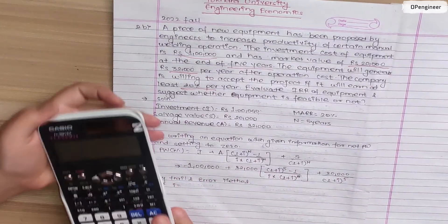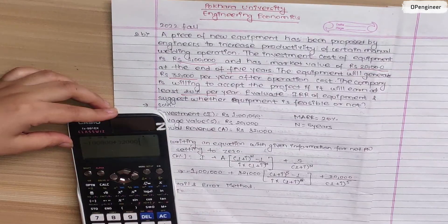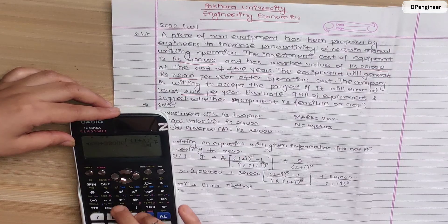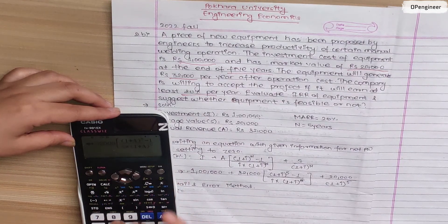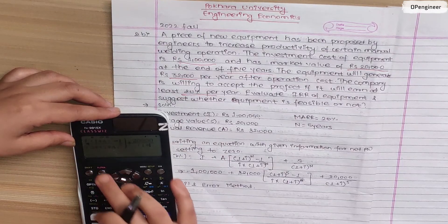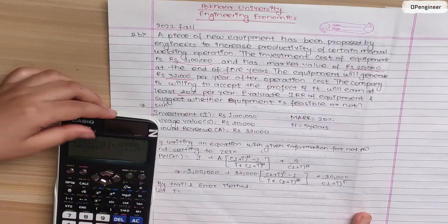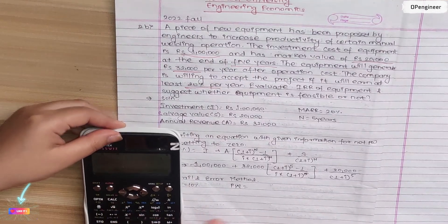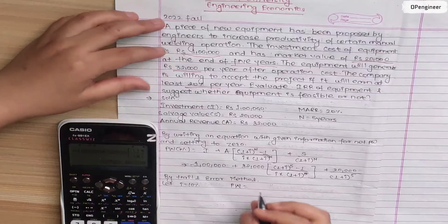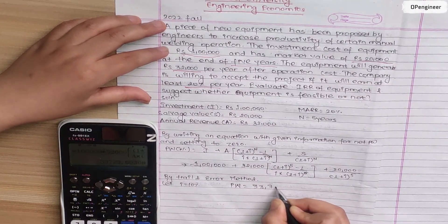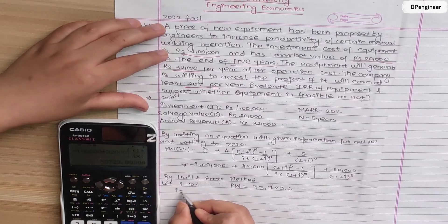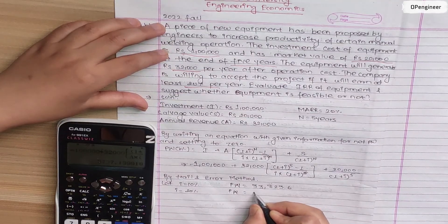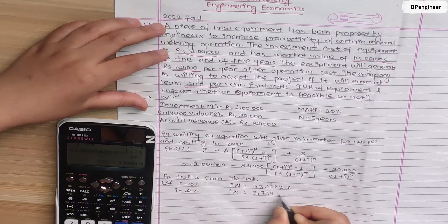Putting the present worth equation in calculator: minus one lakh plus 32,000[(1+i)^5 - 1]/[i(1+i)^5] plus 20,000/(1+i)^5. If i is ten percent or 0.1, the present worth is 3,737.139.